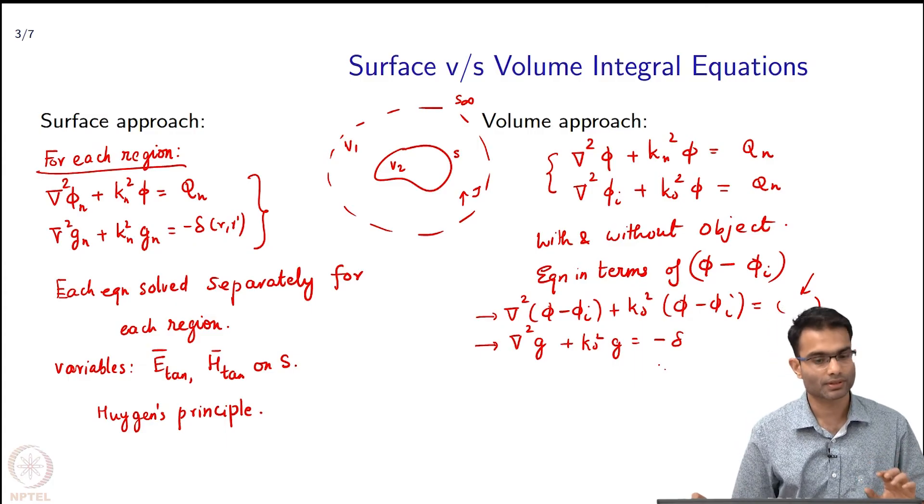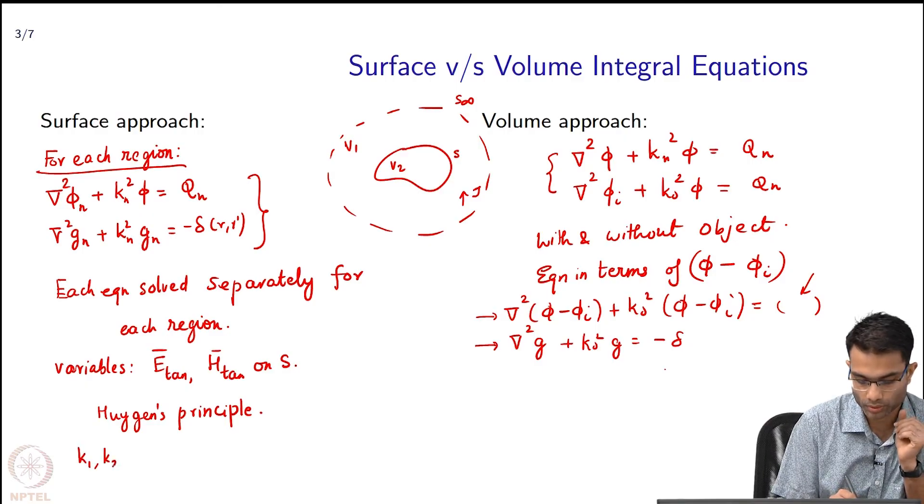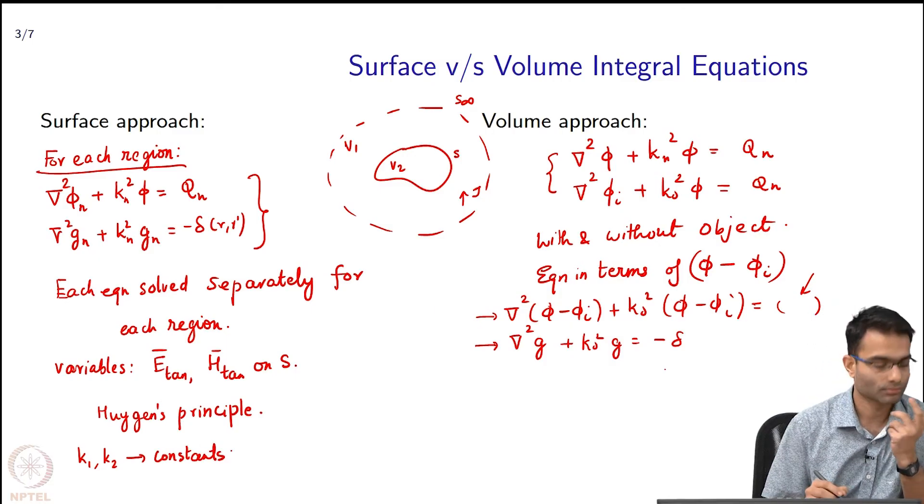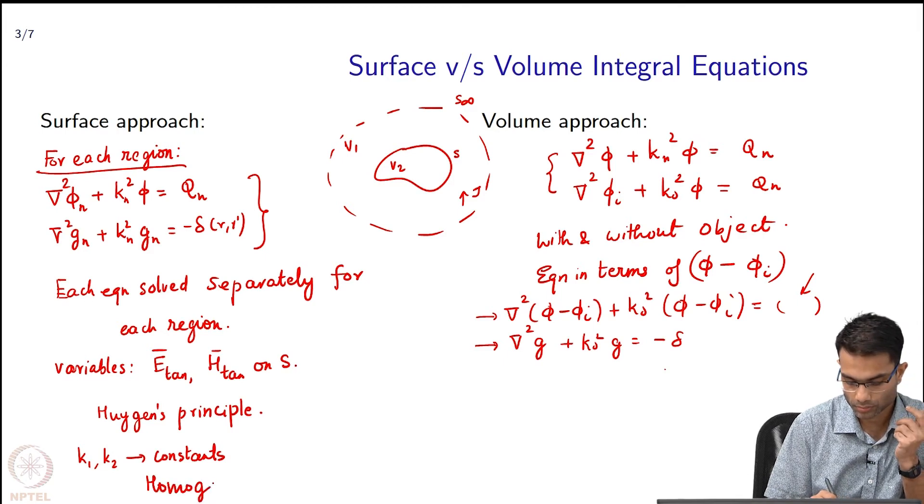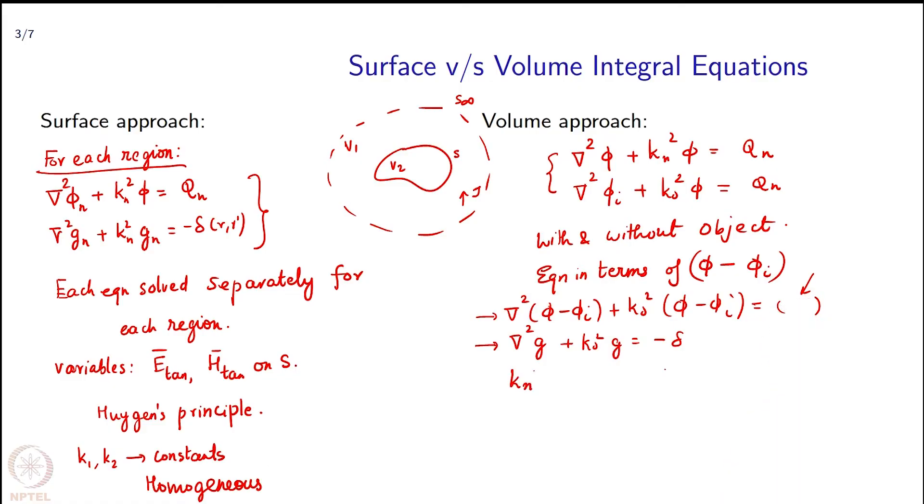What else can we say about the differences? One thing was that in the surface integral approach, K1 and K2 they were constants, so they were for homogeneous objects. Whereas, did I have that limitation here? No - here my Kₙ² was actually k₀²εᵣ(r), function of space. So I could deal with heterogeneous objects. These are the two contrasting differences between these two approaches - nothing new here, we just summarizing what we have already done.